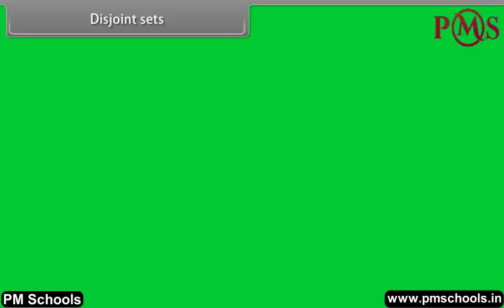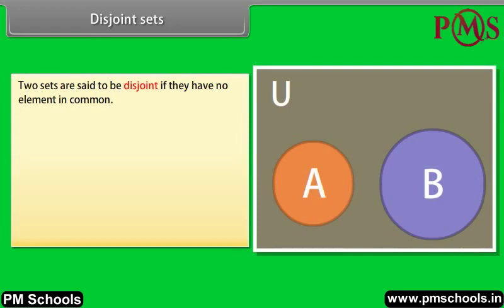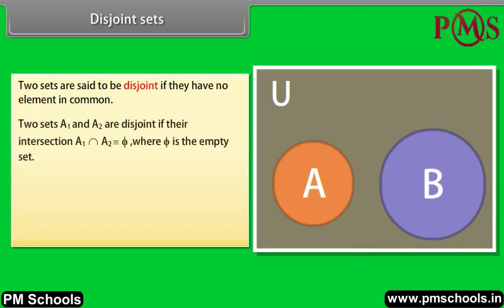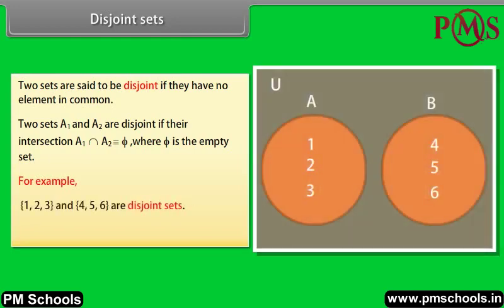Disjoint sets. Two sets are said to be disjoint if they have no element in common. Or we can say that two sets A1 and A2 are disjoint if their intersection is phi, where phi is the empty set. For example, {1, 2, 3} and {4, 5, 6} are disjoint sets. The sets of alive and dead people are disjoint. The disjoint sets can be represented by means of a Venn diagram as shown.